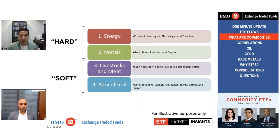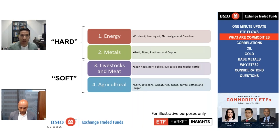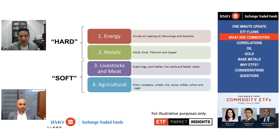Commodities are basically any basic good or raw material. There are hard commodities and soft commodities, typically used as inputs for basic goods — things like steel, lumber, coffee, and aluminum. Soft commodities are perishable goods such as livestock, meat, agricultural grains, wheat, rice, and cocoa. Hard commodities are non-perishable, including metals like gold and silver, and energy such as oil, natural gas, and gasoline. That covers the overall commodity complex and its different types.